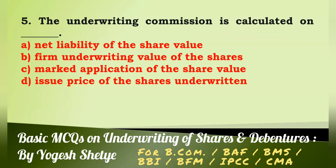Question 5: The underwriting commission is calculated on — (a) net clarity of the shares value, (b) form underwriting value of the shares, (c) the underwriter's marked application of the shares value, (d) issue price of the shares underwritten. Answer: The underwriting commission is calculated on the issue price of the shares underwritten. Answer D.